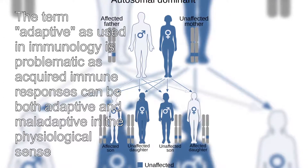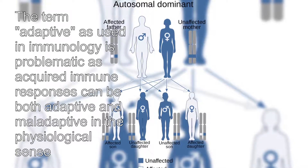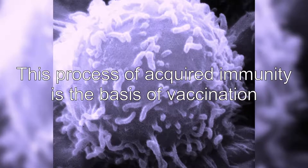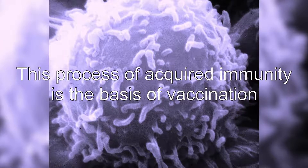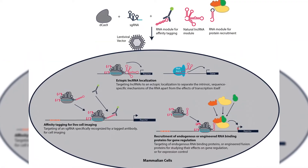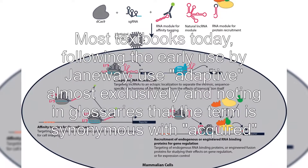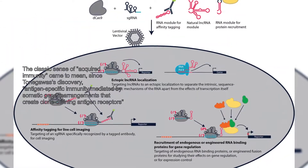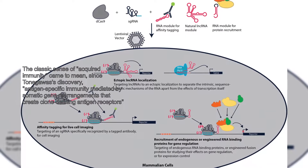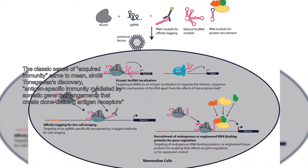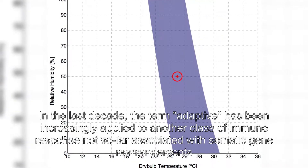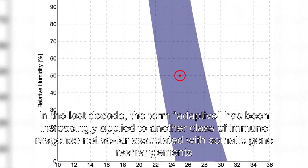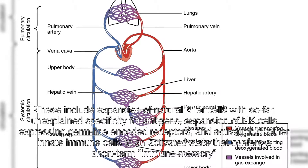The phrase was used almost exclusively by Good and his students and a few other immunologists working with marginal organisms until the 1990s, when it became widely used in tandem with the term innate immunity, which became a popular subject after the discovery of the toll receptor system in Drosophila, a previously marginal organism for the study of immunology. The term adaptive as used in immunology is problematic, as acquired immune responses can be both adaptive and maladaptive in the physiological sense. Most textbooks today, following the early use by Janeway, use adaptive almost exclusively, noting in glossaries that the term is synonymous with acquired.